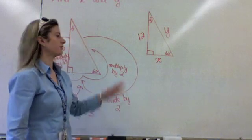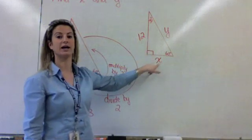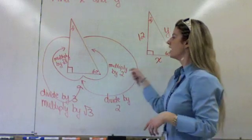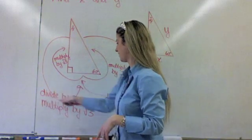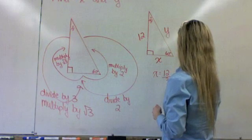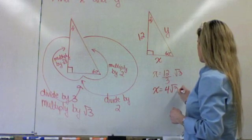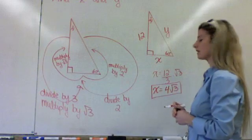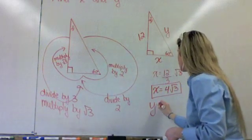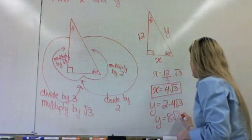Now what if I give you the long leg and ask you to find the short leg and the hypotenuse? You always want to go to the short leg first. Long leg to short leg: divide by 3, then multiply by root 3. So x equals 12 divided by 3, then times root 3, giving us 4 root 3. Then short leg to hypotenuse is multiply by 2, so y equals 2 times 4 root 3, which is 8 root 3.